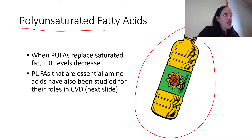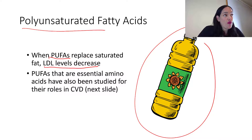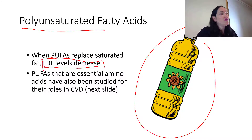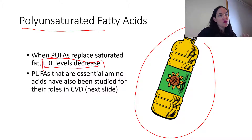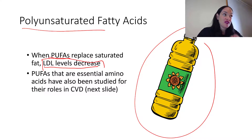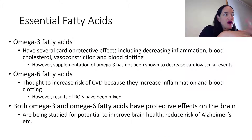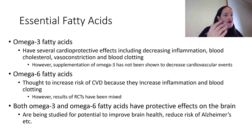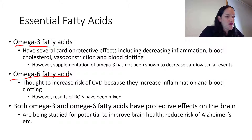When it comes to polyunsaturated fats, like those found in vegetable oils, a general rule of thumb is to replace saturated fats with more sources of PUFAs. When we consume more polyunsaturated fats instead of saturated fat, that can lead to a decrease in LDL, which we believe can potentially lower the risk of cardiovascular disease. Consuming more PUFAs — especially essential fatty acids with double bonds at position three or six — may have additional cardioprotective roles.